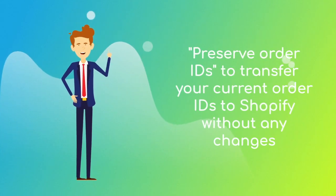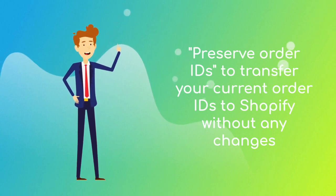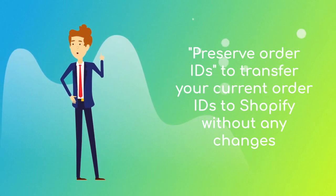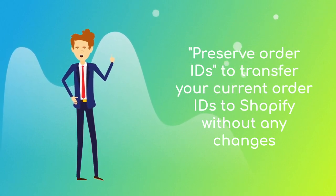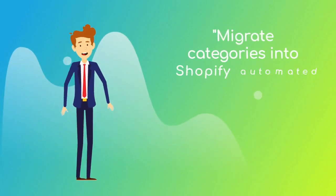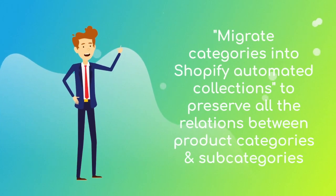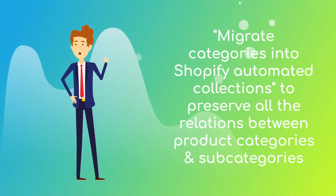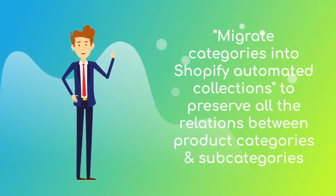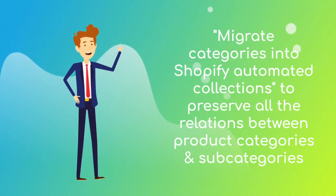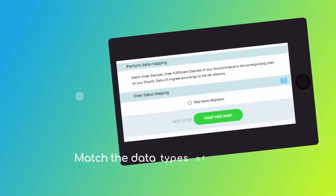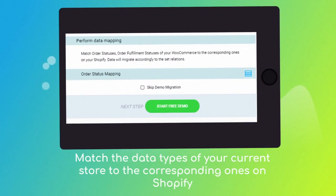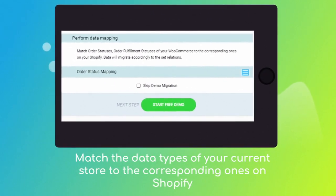Preserve Order ID option — to transfer your current store order IDs to Shopify without any changes. Migrate source store categories into the Shopify Automated Collections option will allow you to preserve all the relations between product categories and subcategories on the new Shopify store. Next, click the hamburger button to match order statuses and customer groups of your current shopping cart to the corresponding ones on your Shopify.